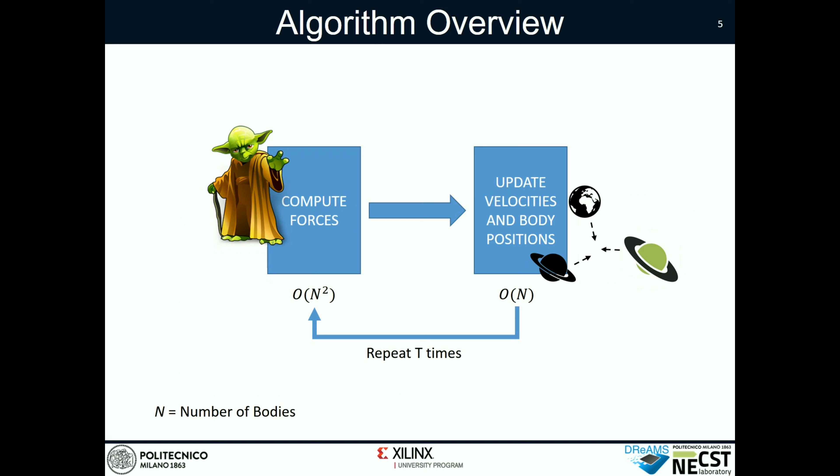The algorithm is composed of two main parts. The first part computes the forces and the second part updates the velocities and bodies positions. Since the forces computation has a complexity of order M-squared, where M is the number of bodies, we decided to accelerate it through an FPGA while keeping the second part on the CPU.